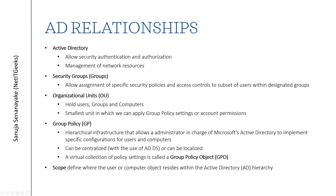Organizational Units, also known as OUs, hold users, groups, and computers just like a security group, but OUs also allow you to apply Group Policy settings or account permissions to that particular unit. You cannot apply Group Policy settings to security groups — if you want to apply a Group Policy setting, you have to apply it to an Organizational Unit. The key concept is that an OU is the smallest unit to which you can apply Group Policy settings or account permissions.